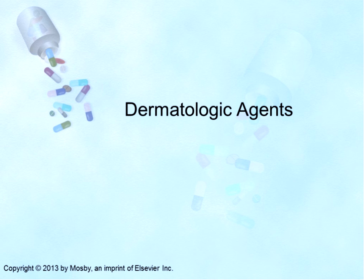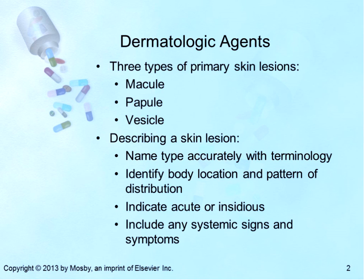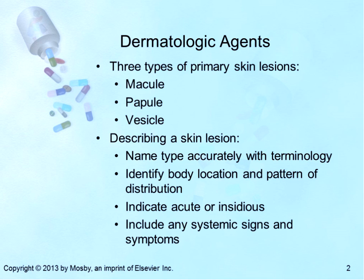We're going to start talking about dermatologic agents. There are three types of primary skin lesions that have been identified: the macule, the papule, and the vesicle. Variations of these lesions are named according to the size of the lesion. Secondary lesions include erosion, ulcer, fissure, crust, lichenification, atrophy, excoriation, scar, and keloid. When describing a skin lesion, it's important to accurately name the type of lesion using this terminology. Location on the body and pattern of distribution are also important.